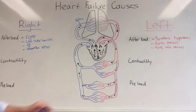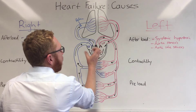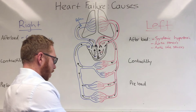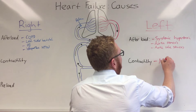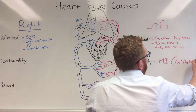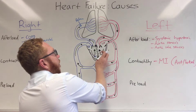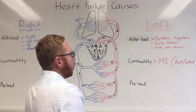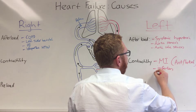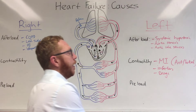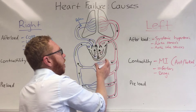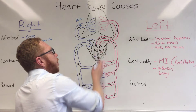Moving to contractility causes: this is where the heart muscle lacks the ability to contract sufficiently and therefore fails. The most common cause would be an MI — myocardial infarction — commonly in the anterolateral portion of the heart. Another cause is myopathies of the heart muscle, which could be due to infections or drugs such as cocaine, alcohol, or certain chemotherapy drugs — these are cardiomyopathies or intrinsic muscle problems.